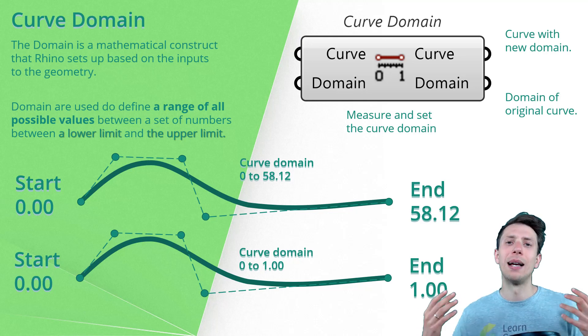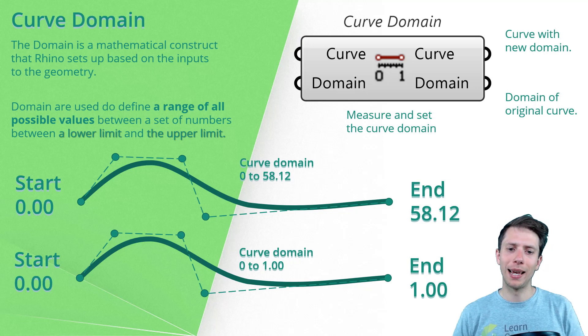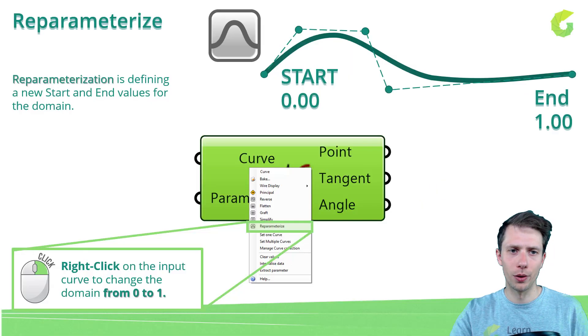And this is how we are describing it. We are starting at zero and our end is at 58.12. But we can actually modify this curve and make a simplification and change this domain from zero to one. We are not going to change anything in the geometry because we have the same number of points and the same degree. Here we are just making some simplification in which range we are going to find the possible values. This is why we use curve domain.